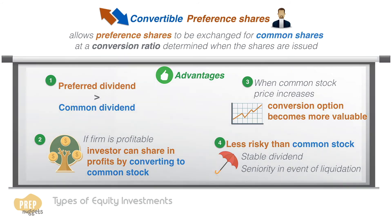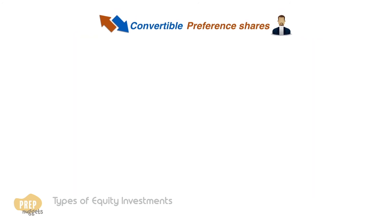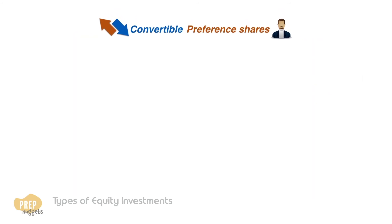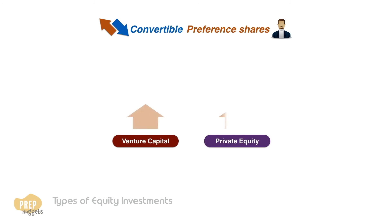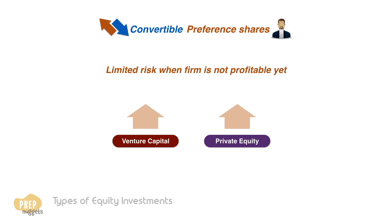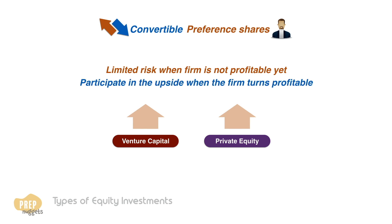Because of their upside potential, convertible preferred shares are often issued by risky venture capital and private equity firms. Investors prefer this to limit risk exposure when the firm is not yet profitable, and to participate in the upside when the firm turns profitable.